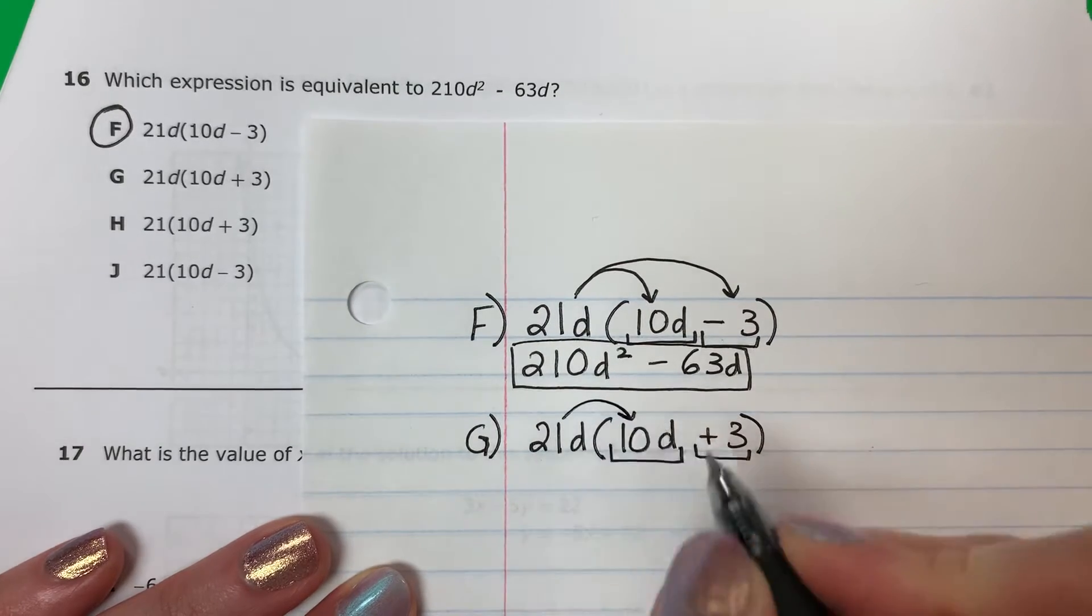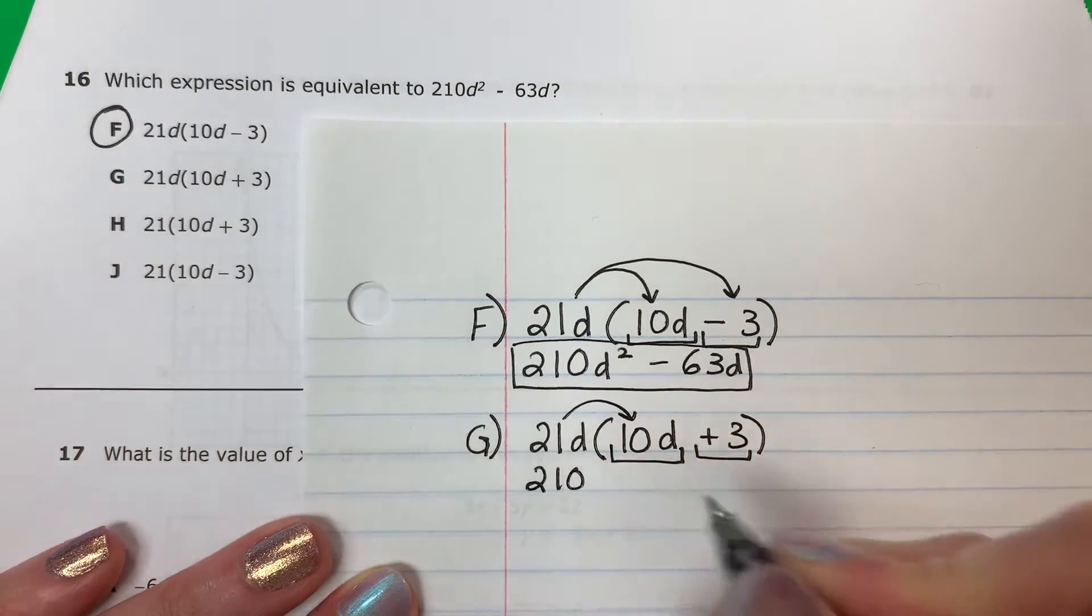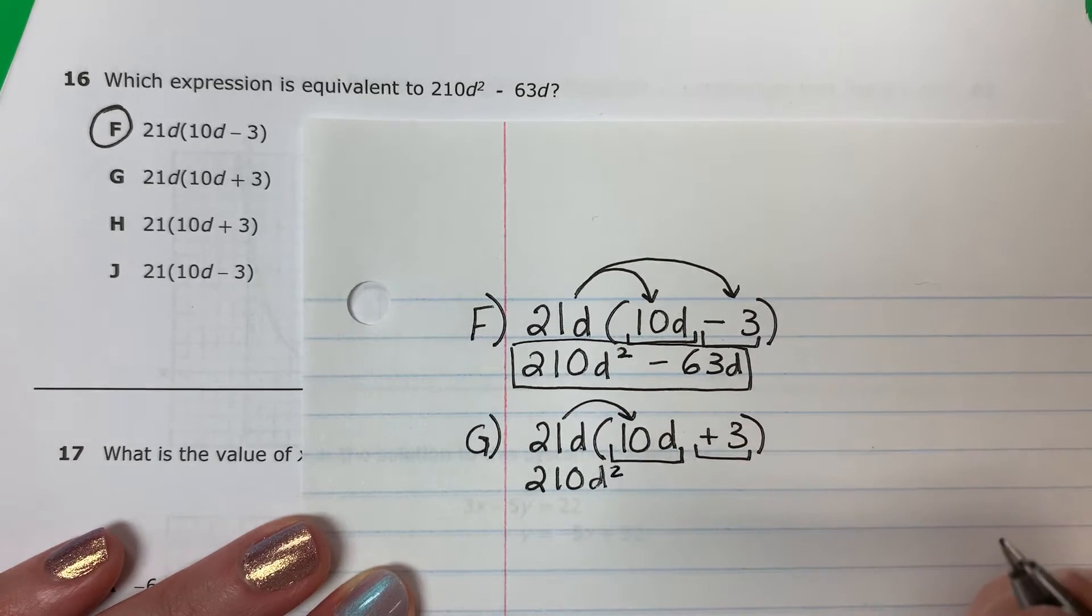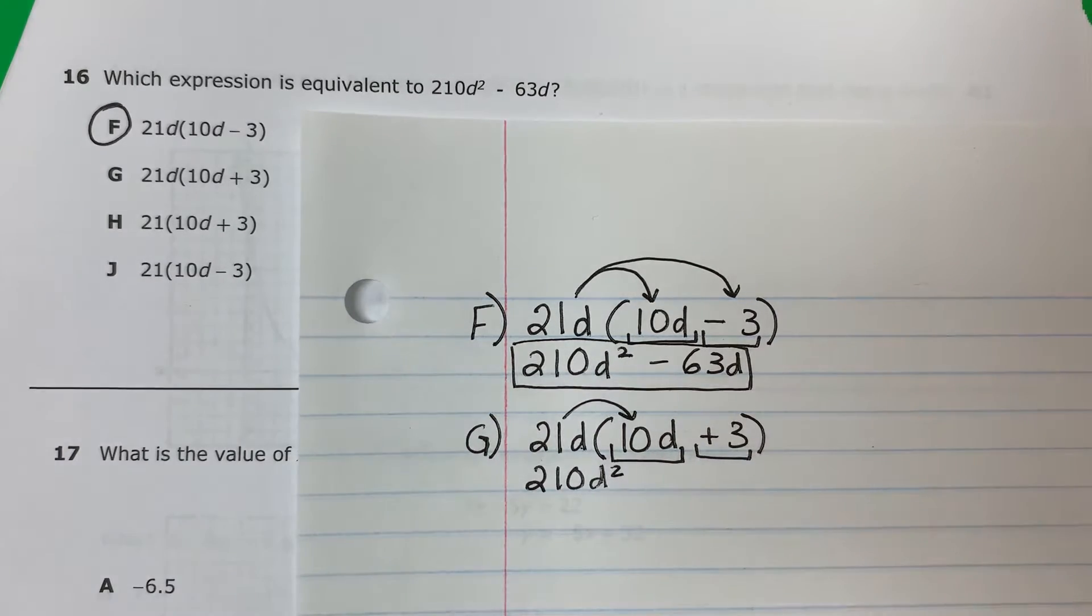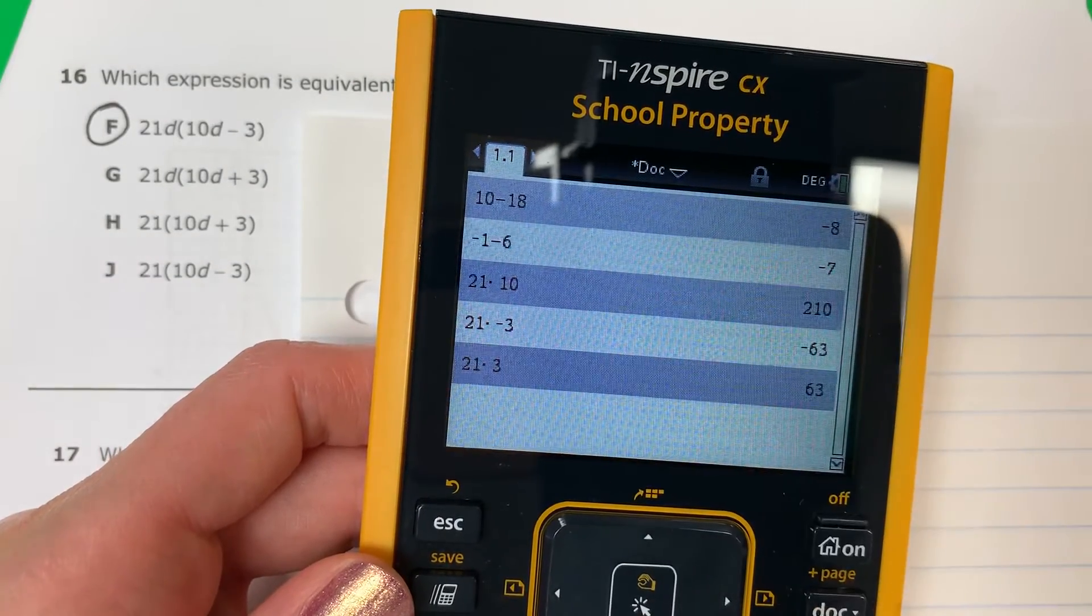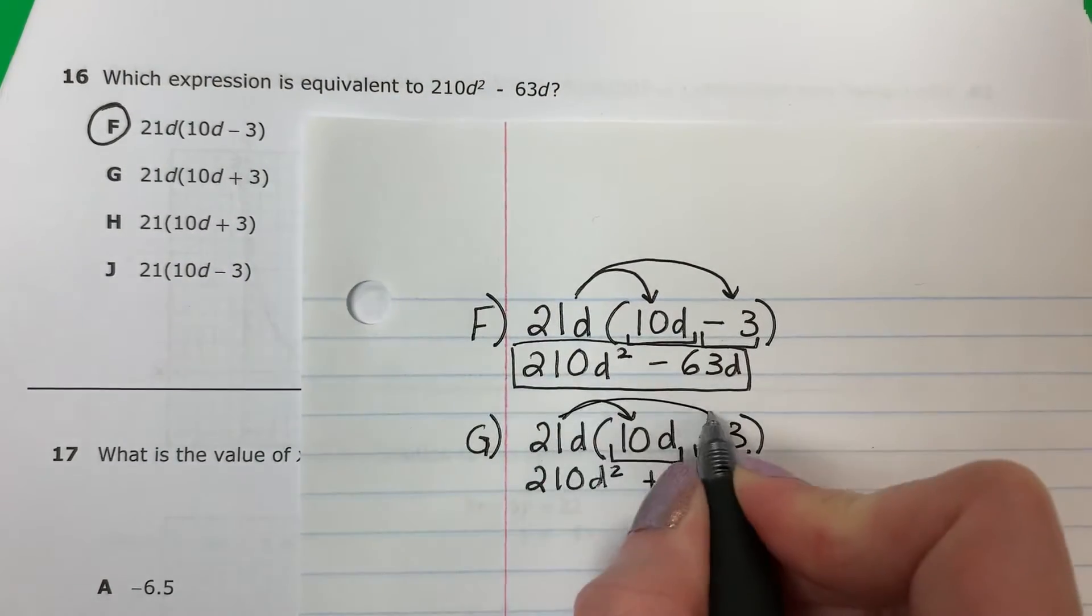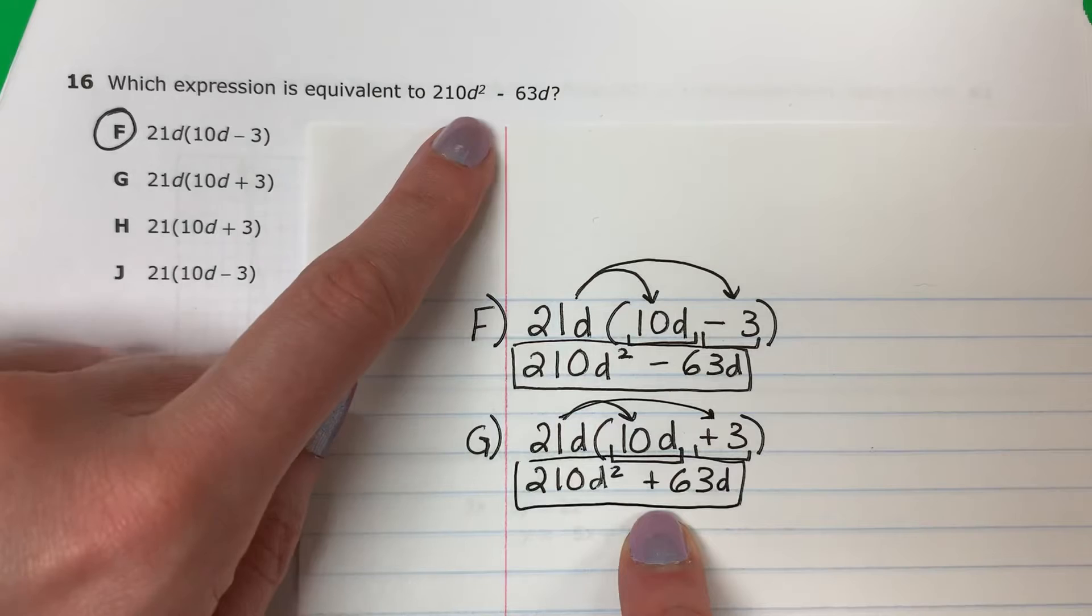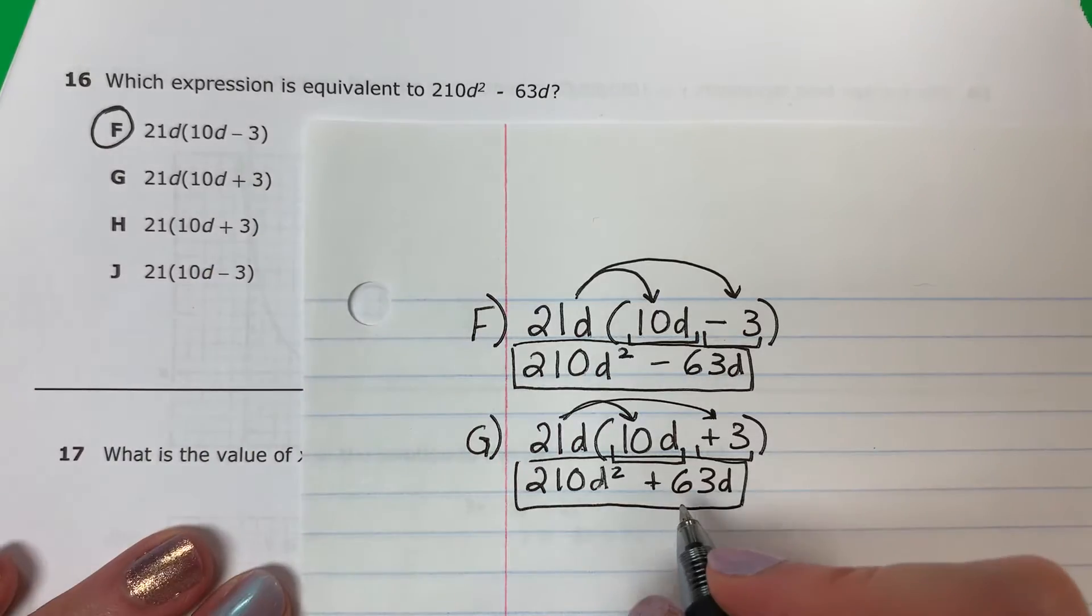We're going to do 21 times 10. Veintiuno por 10. That is 210 D. How many Ds? Cuántas Ds? One, two. That's squared. Cuadrado. 21 times 3. Veintiuno por 3. Let's put that in the calculator. 63 positive. Positivo. Positive 63 D. Is that the same? Es igual? No. This is plus. Este tiene más. Here there's minus. Aquí hay menos. It's different. Es diferente.